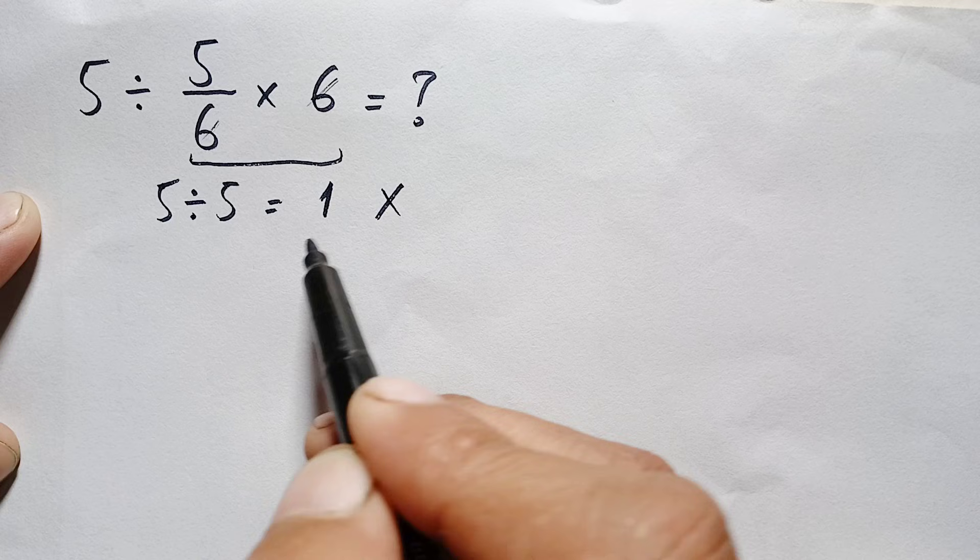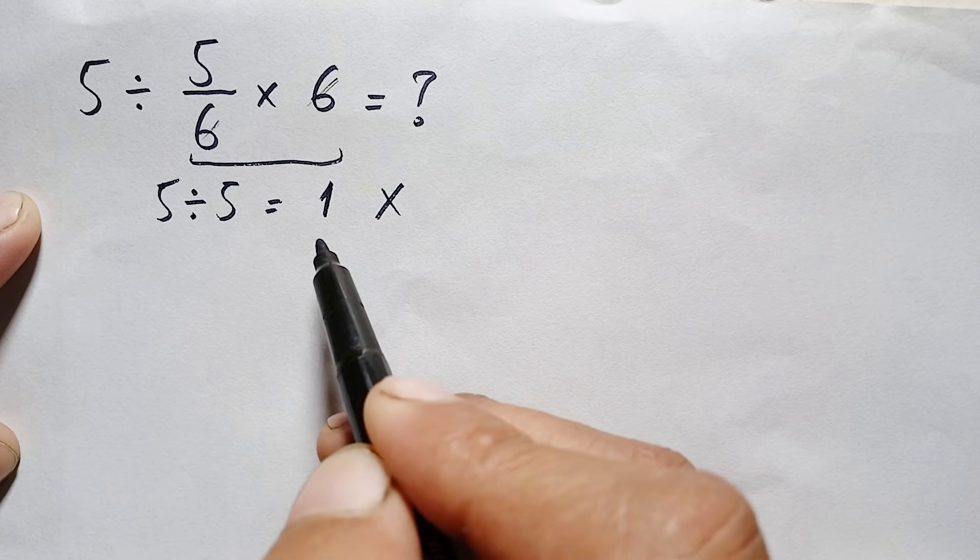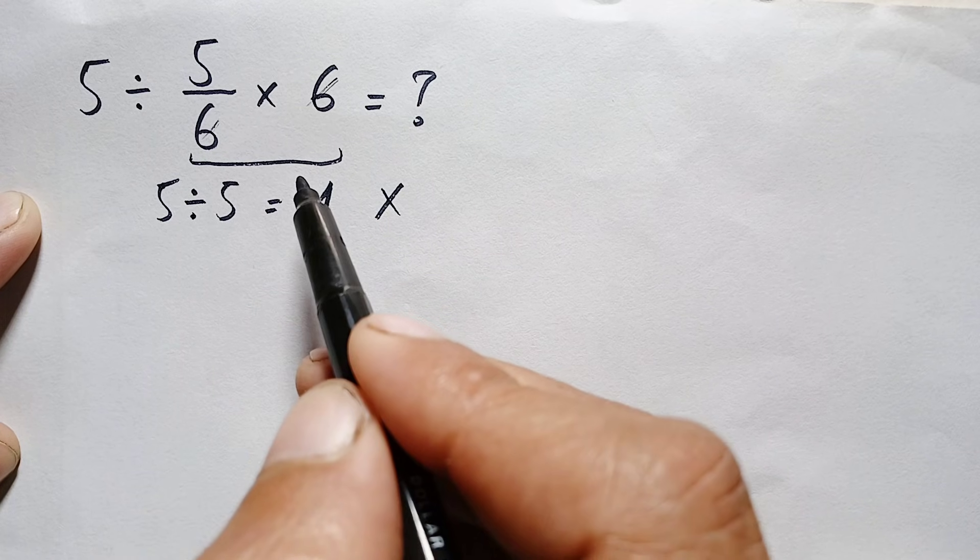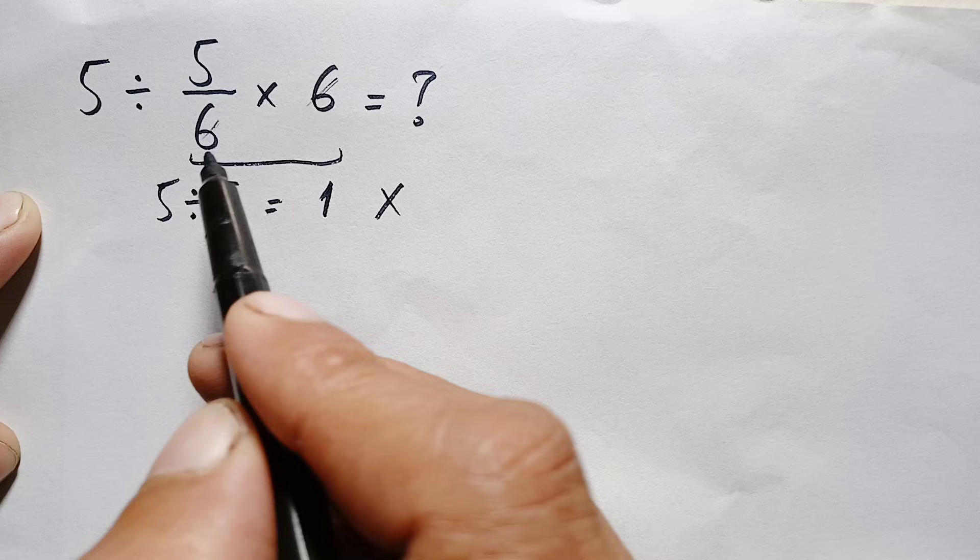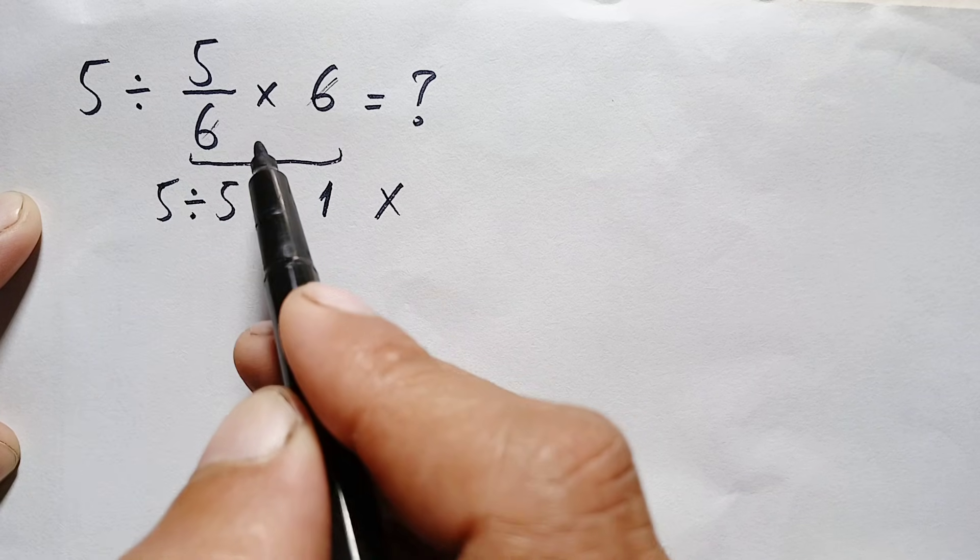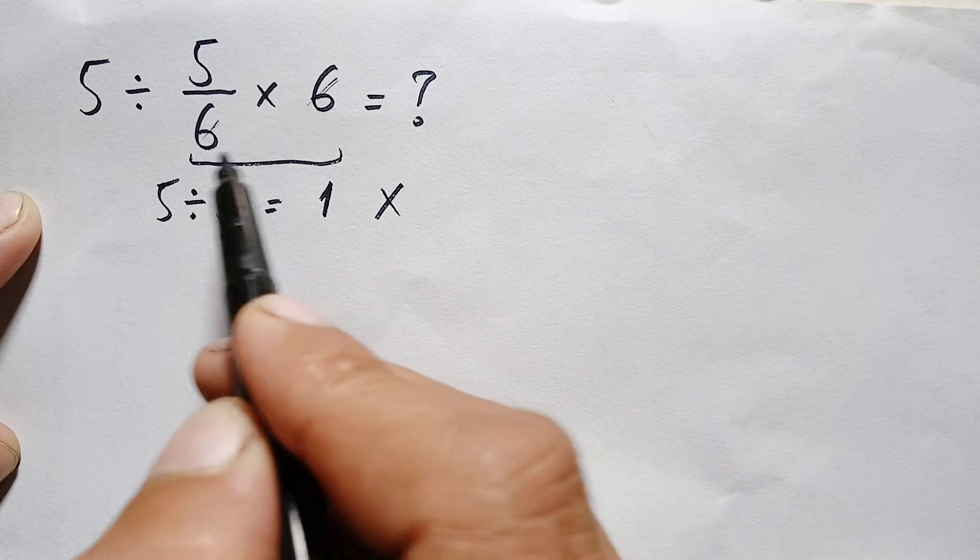But this answer is totally wrong. Why did we get the wrong answer? We got the wrong answer due to wrong order of operations. Looking at the problem, we have two operations: division and multiplication, so we have to do these operations from left to right.